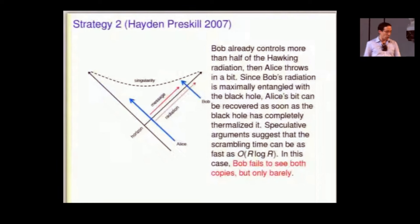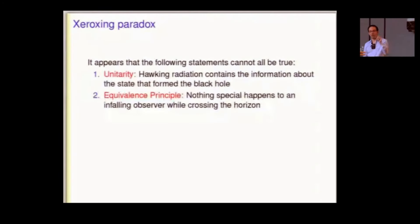I won't describe it in detail, but you basically have a black hole that's already old. Half of it has evaporated. Bob holds, has control over that early Hawking radiation. It's maximally entangled, therefore, with the black hole. Now Alice drops a bit in. Turns out that the black hole basically returns that bit immediately, limited only by the timescale for scrambling or thermalization, mixing in into all of the black hole's degrees of freedom. And then Bob, so Bob gets it back quickly, jumps in, tries to see Alice's copy of the bit just as before. This time he misses just barely.